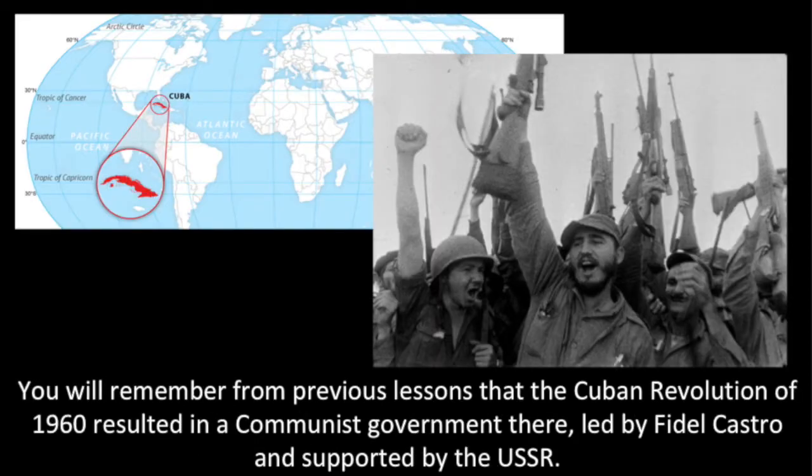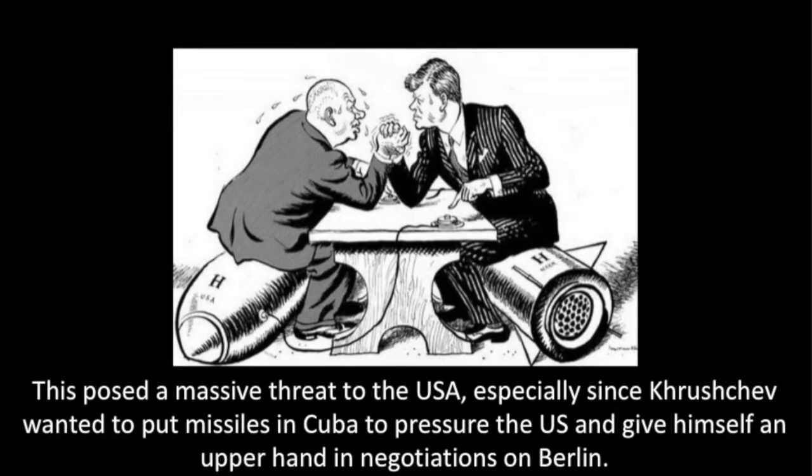You will remember from previous lessons that the Cuban Revolution of 1960 resulted in a communist government there led by Fidel Castro and supported by the USSR. This posed a massive threat to the USA, especially since Khrushchev wanted to put missiles on Cuba to pressure the US and give himself an upper hand in negotiations on Berlin.